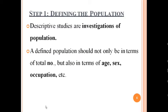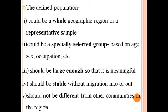The first step is defining the population. Descriptive studies investigate a defined population, which should be described not only in total number but also in terms of age, gender, occupation, and other features. The population could be a whole geographical region or a representative sample, or a specifically selected group. It should be large enough to be meaningful, stable without migration, and should not be grossly different from other communities in the region.